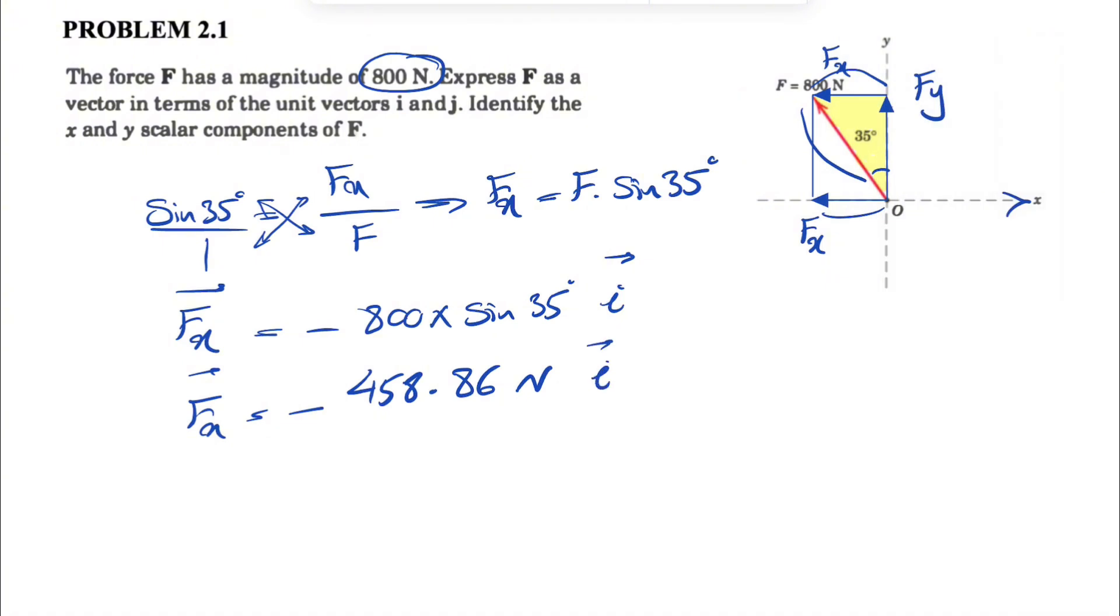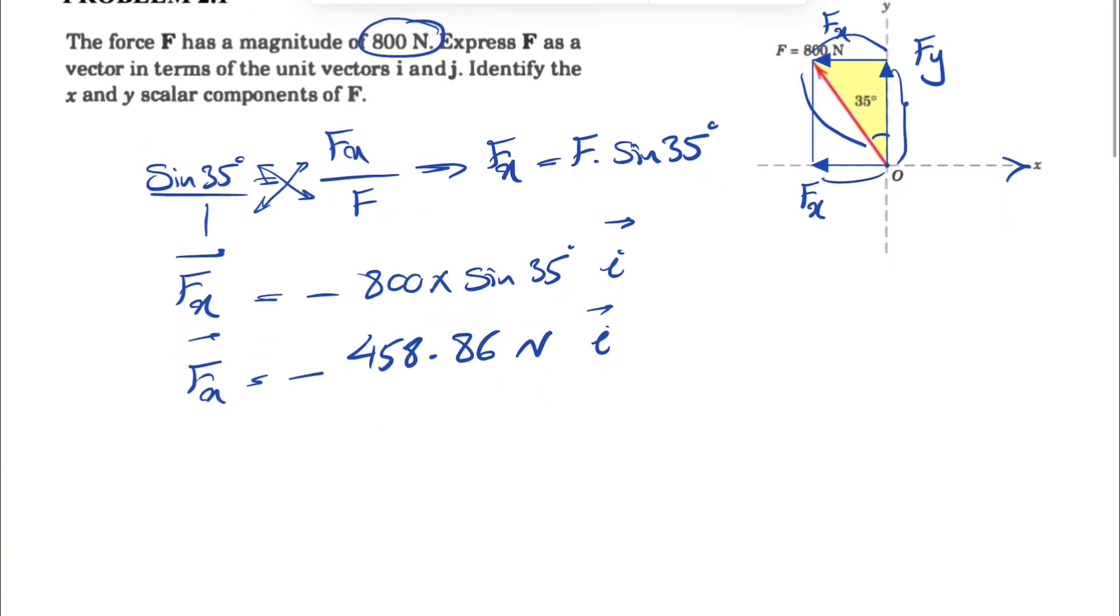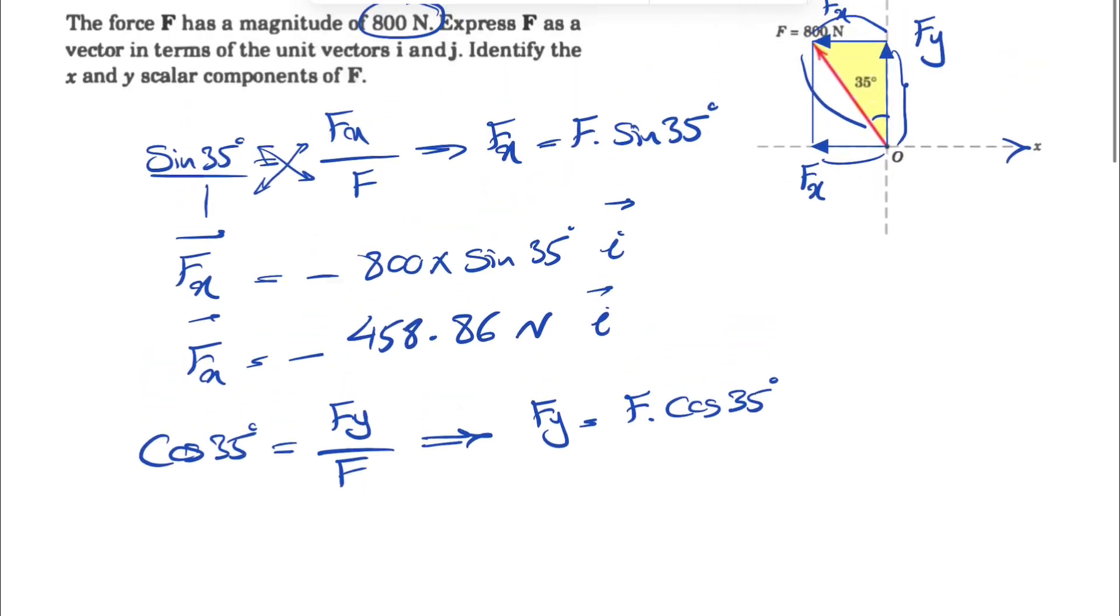Now let's find Fy. For finding Fy, since we are dealing with the adjacent of 35 degrees, it makes sense to go with cosine of 35 degrees. That's going to be Fy over F. If we cross multiply again, we get Fy equals F times cosine of 35 degrees.